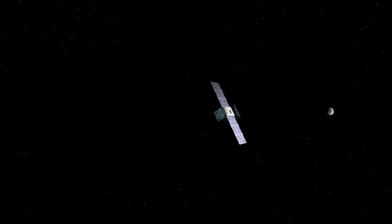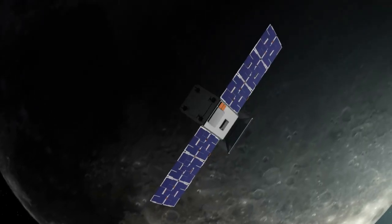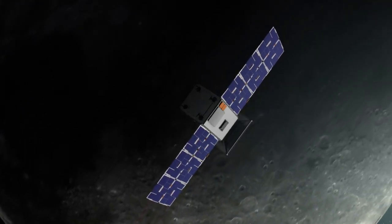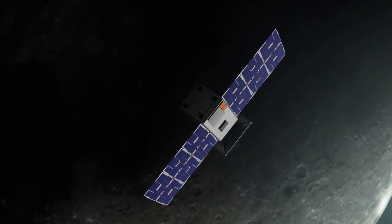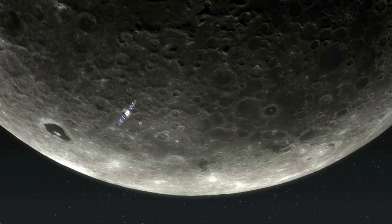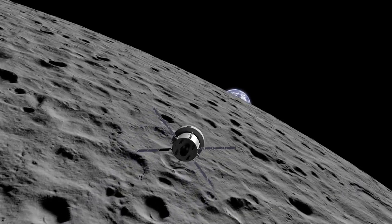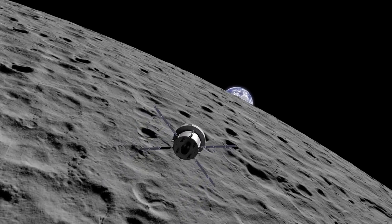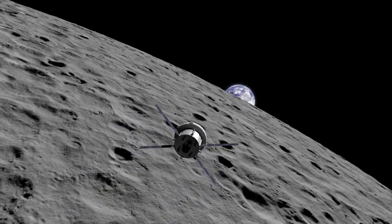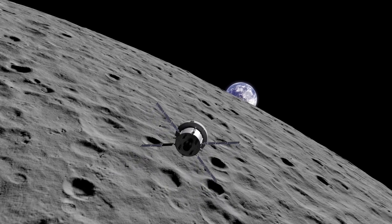If successful, this software, referred to as a Cislunar Autonomous Positioning System or CAPS, will allow future spacecraft to determine their location without having to rely exclusively on tracking from Earth. This capability could enable future technology demonstrations to perform on their own without support from the ground and allow ground-based antennas to prioritize valuable science data over more routine operational tracking.